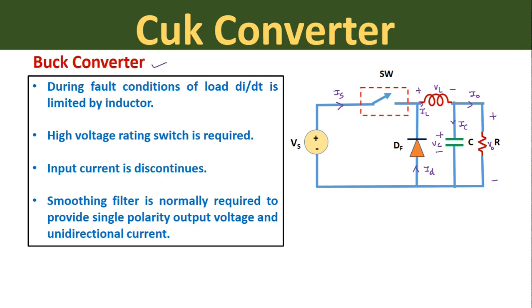First we will take the buck converter. First point: during fault conditions of the load, dI/dt is limited by the inductor. In the circuit diagram, an inductor is connected on the load side. Whenever there is a fault in the load, heavy current flows through the load to ground, and this heavy current will be limited by the inductor present at the output side. Second point: a high voltage rating switch is required. The switch SW is connected in series with the source. Since the buck converter steps down input voltage — Vs is greater than V0 — this high input voltage must be handled by switch SW.